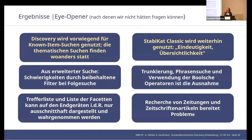On this slide we can see the bycatch — things we were not searching for. Our top discovery is that the system is mainly used for known-item searches. Thematic search takes place elsewhere. This is something participants told us in participant monitoring, and we can also see it in the log file data. People clearly told us: when we want to search thematically, we go elsewhere — Google Scholar, JSTOR, specialized databases, etc.